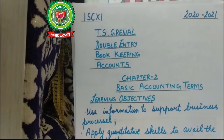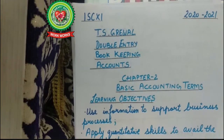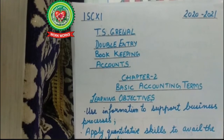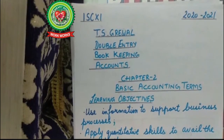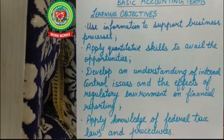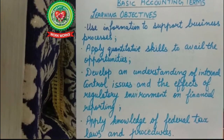We are doing this chapter so we can have clarity of these terms and come to know how to use them in different accounting problems. For reference, we are using T.S. Garibald's Double Entry Bookkeeping accounts book. Today our chapter is basic accounting terms. Let me introduce you with the learning objectives: use information to support business processes, apply quantitative skills to avail opportunities, develop an understanding of internal control issues and the effects of regulatory environment on financial reporting, and apply knowledge of federal tax laws and procedures.